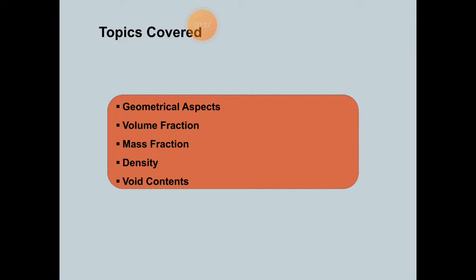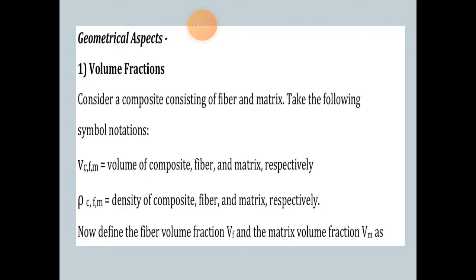As per the geometrical aspects, most composite materials are neither homogeneous nor isotropic. A homogeneous material is one where properties are uniform throughout — they do not depend on position in the body. An isotropic material is one where properties are direction independent. Composites are inhomogeneous as well as non-isotropic materials.